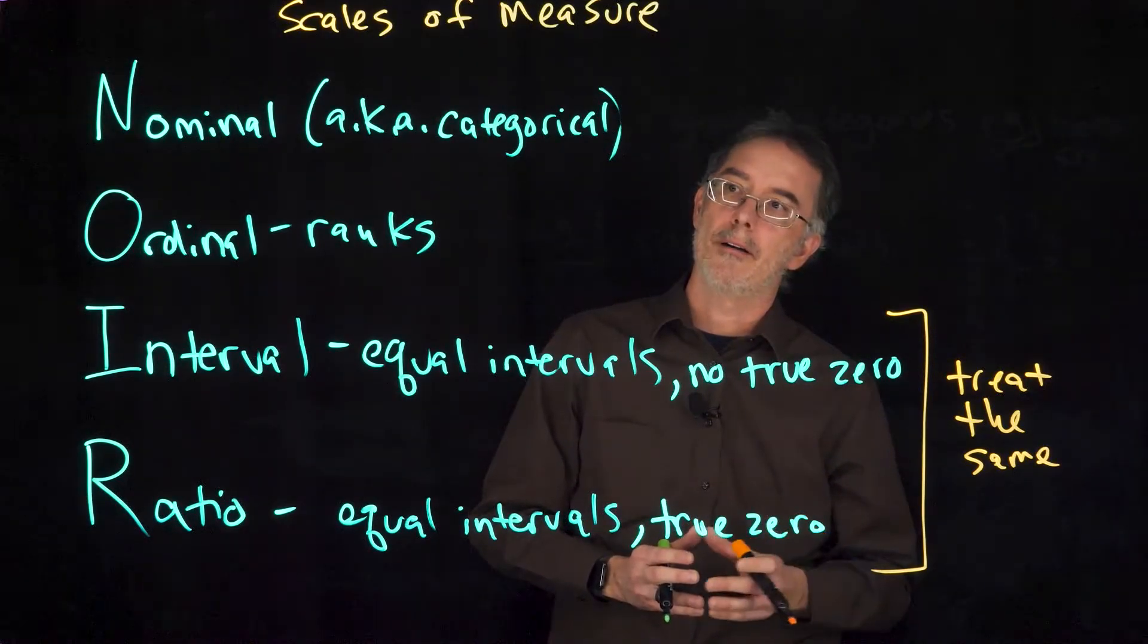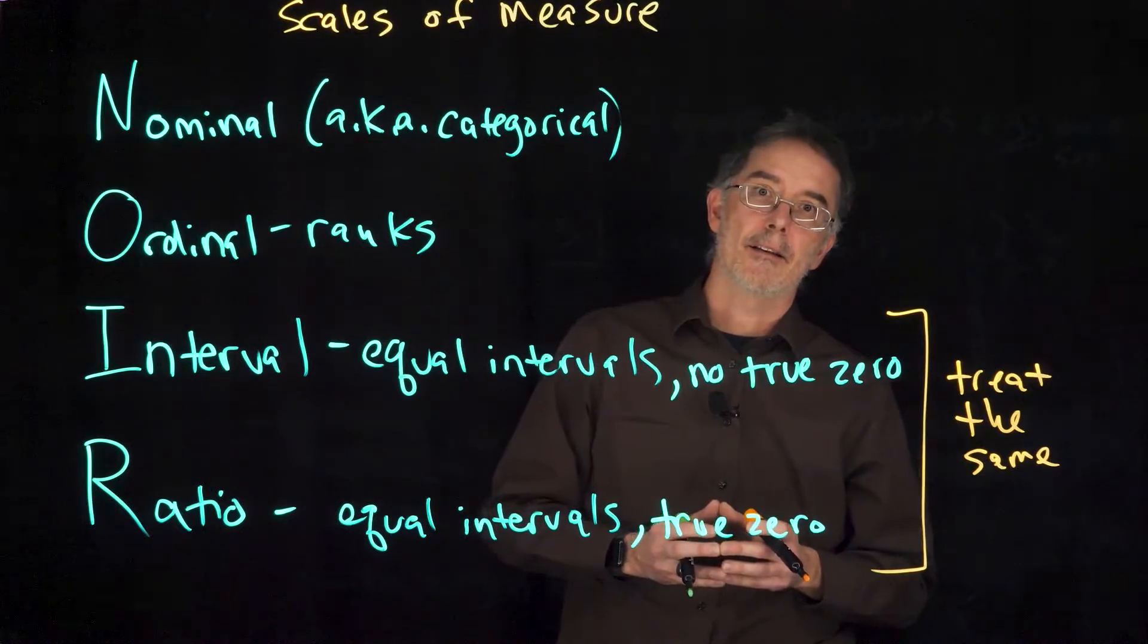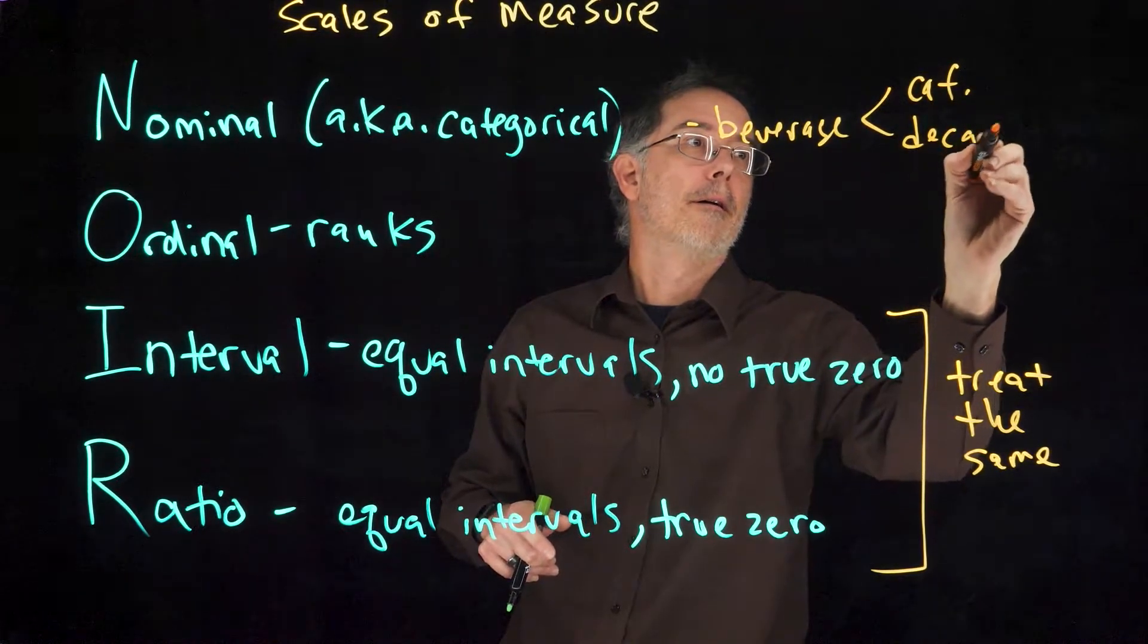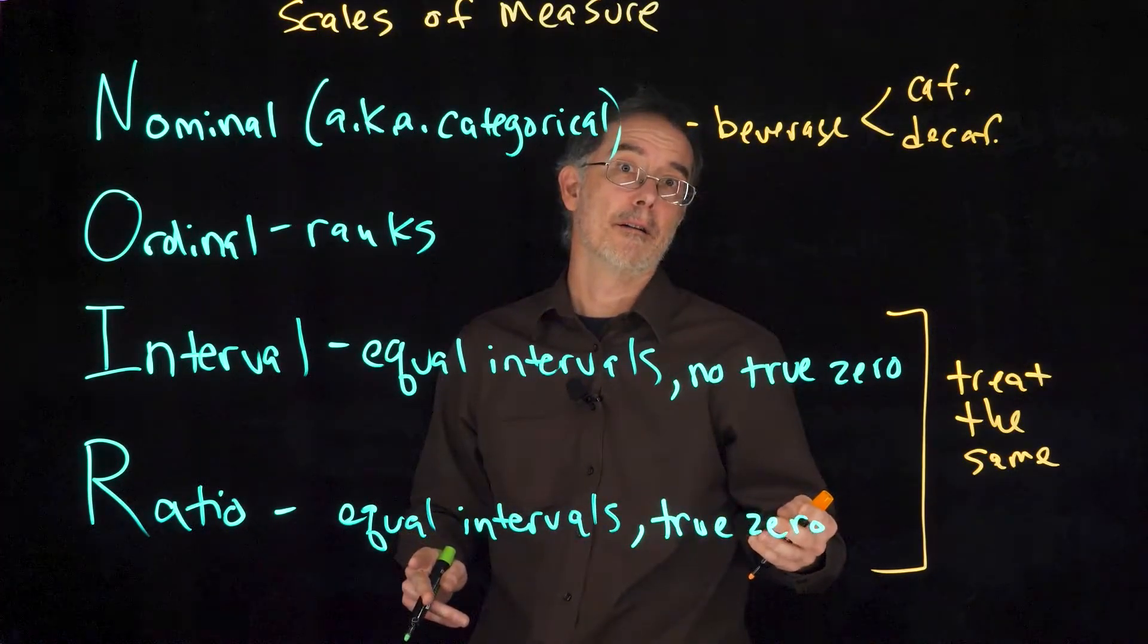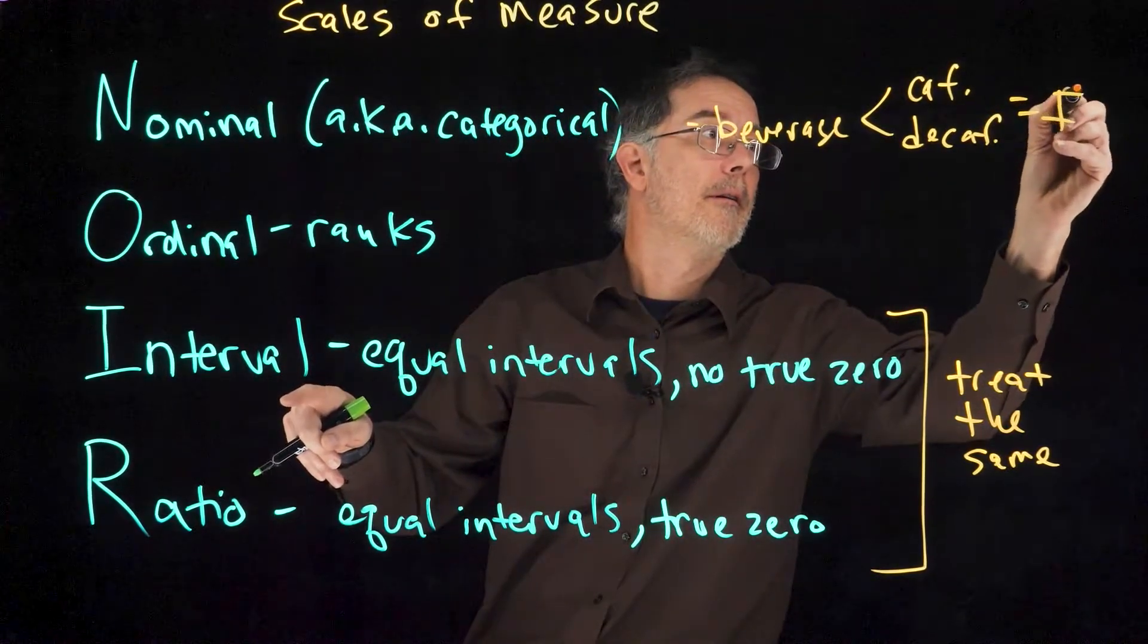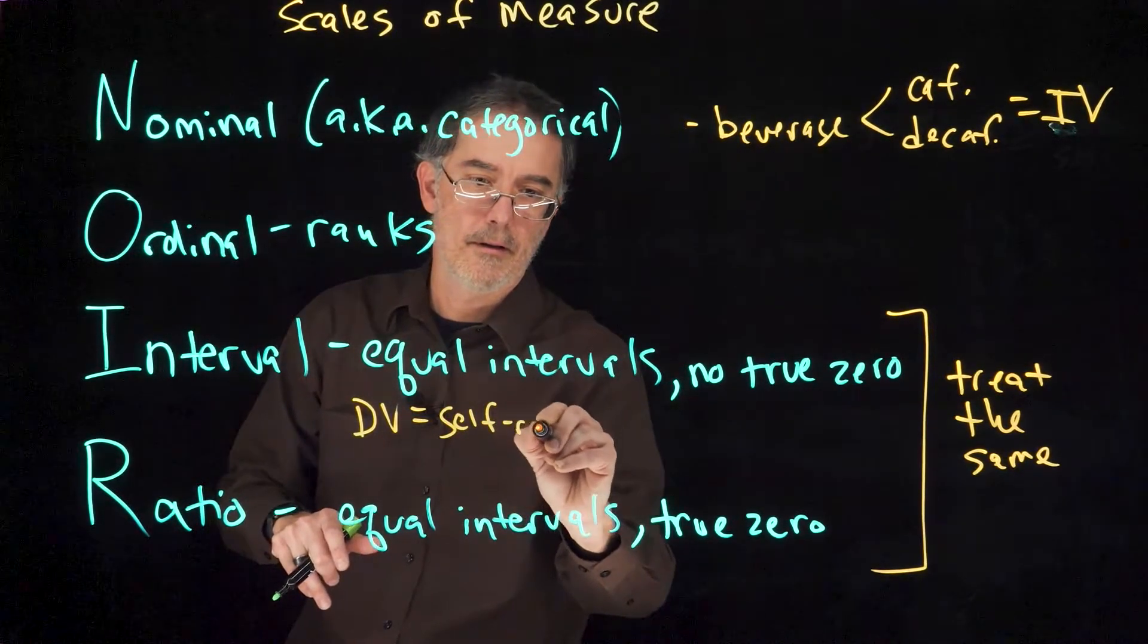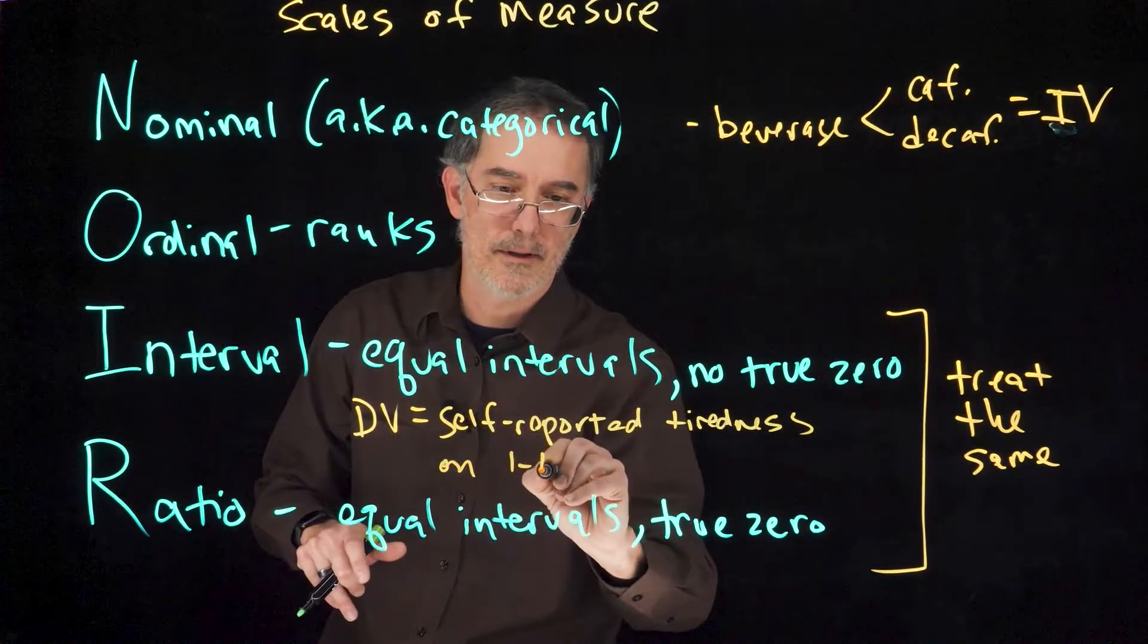I also wanted to connect these ideas to experiments and correlational studies a little bit. We talked about an example where a researcher does an experiment where they give some participants caffeinated coffee and other folks decaffeinated coffee. In that case, the beverage variable would be nominal because it would be two groups, caffeinated or decaffeinated. If the participants report how tired they are on a 1 to 10 scale, then in that example, the outcome variable, this is the independent variable, the IV, the independent variable. If somebody is self-reporting how tired they are in that experiment, then the dependent variable is interval, self-reported tiredness on 1 to 10 scale.